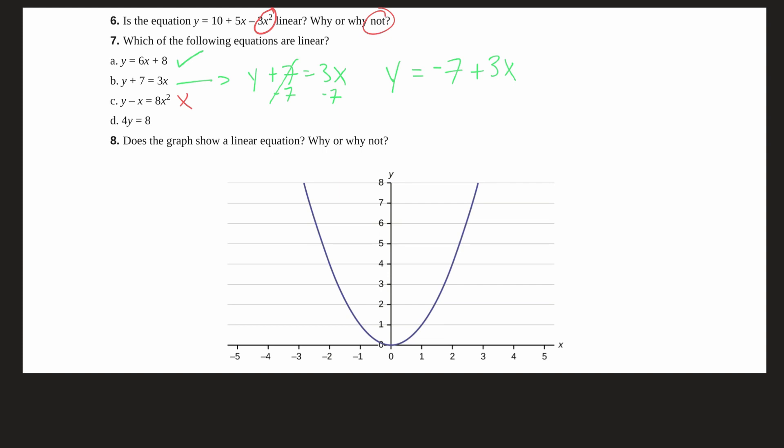So what about 4y equals 8? Well, in this case, we can go ahead and simplify this a little bit. I'm going to move this over here. So 4y equals 8. Let's get y by itself. So we'll divide by 4. 4 divided by 4 is 1. So we're left with y equals 8 divided by 4, which is 2. So y equals 2.